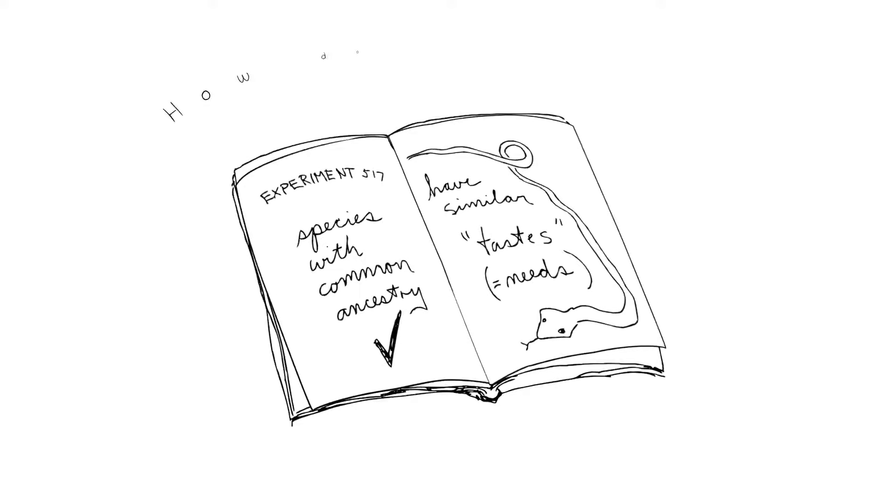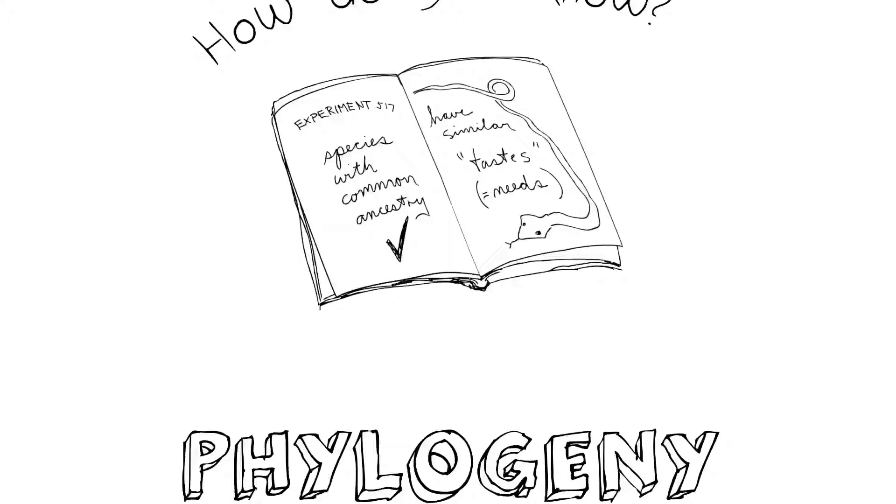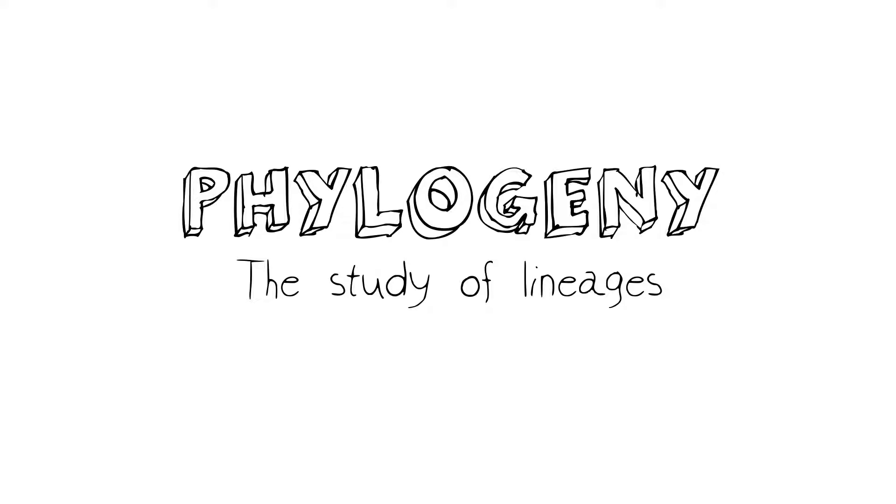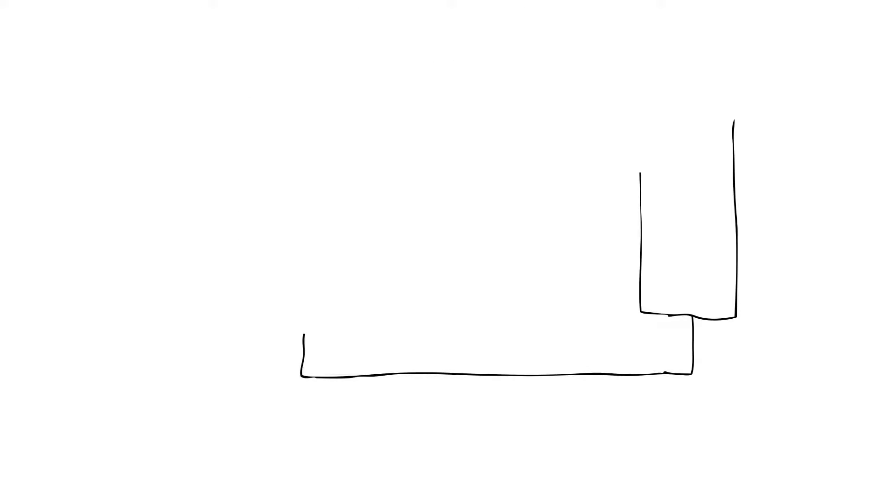But how do you know that things are more or less distantly related? That's where phylogeny, the study of lineages or evolutionary lineages, comes in. And I'm going to give you a little example that illustrates how this can be an important tool in our efforts to make decisions about where to focus our energies in saving ecosystems.